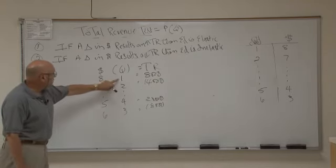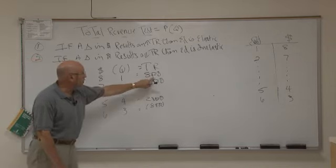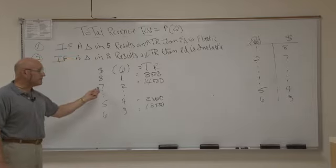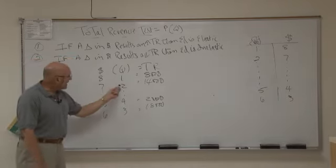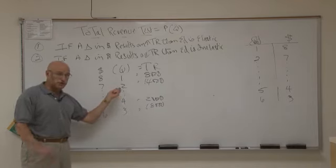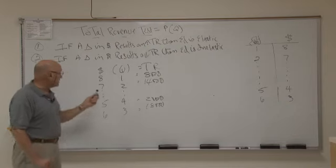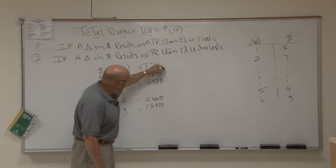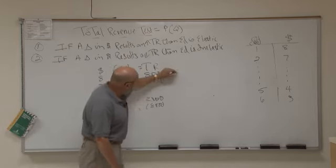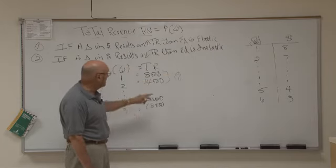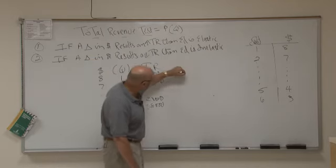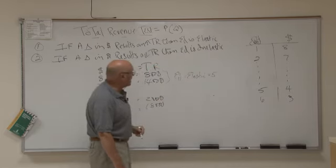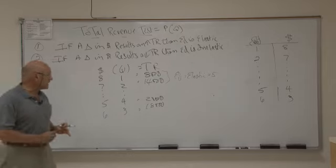Using the same numbers from the midpoint formula: at a price of $8, I sold 1,000 tickets and total revenue was $8,000. When I lower my price to $7 a ticket, I sell 2,000 tickets — price times quantity gives $14,000 in total revenue. Total revenue went up, so the elasticity of demand coefficient is higher and therefore the demand is elastic. This verifies the midpoint calculation of 5.